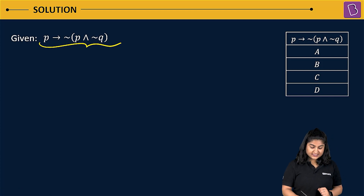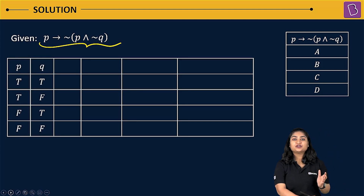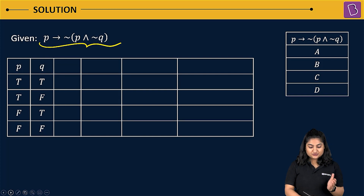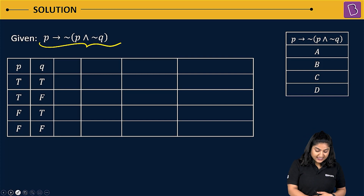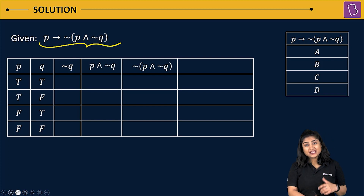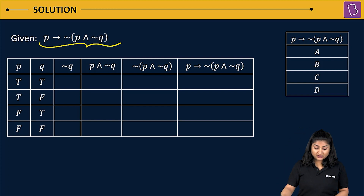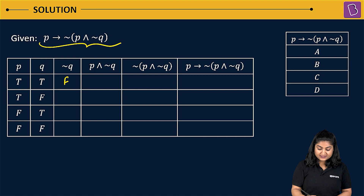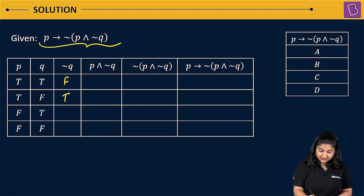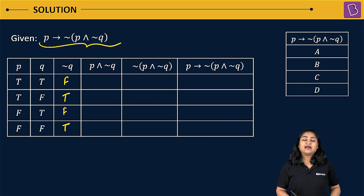Now forming the truth table, I'll start with different combinations of P and Q: true-true, true-false, false-true, and false-false. Then we calculate negation of Q. If Q is true, negation Q is false; if Q is false, negation Q is true. So we get F, T, F, T for negation Q across the four combinations.